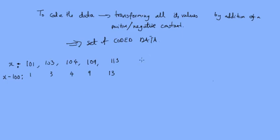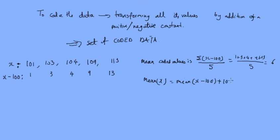So the mean for the coded values is sigma x minus 100 over 5, which is 1 plus 3 plus 4 plus 9 plus 13 divided by 5, which equals 6. So the mean of x is the mean of x minus 100 plus 100, which gives us 106.